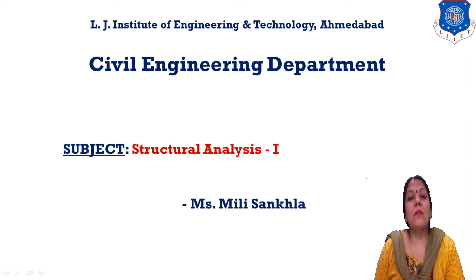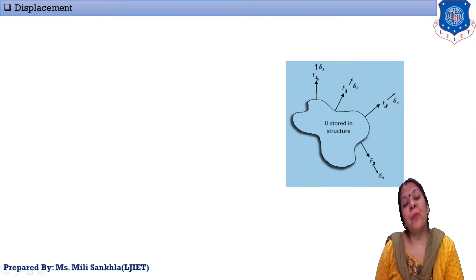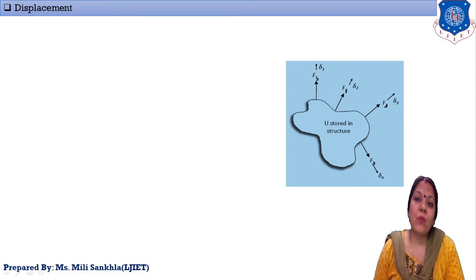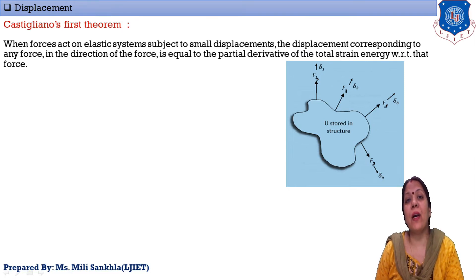Good morning students. In Structural Analysis Part One, we start our new method: Castigliano's First Theorem. Here I take one figure showing an elastic body subjected to a number of forces. Due to these forces, deflections del-1, del-2, del-3, up to del-n occur in this elastic body. Now we apply Castigliano's Theorem Number One.